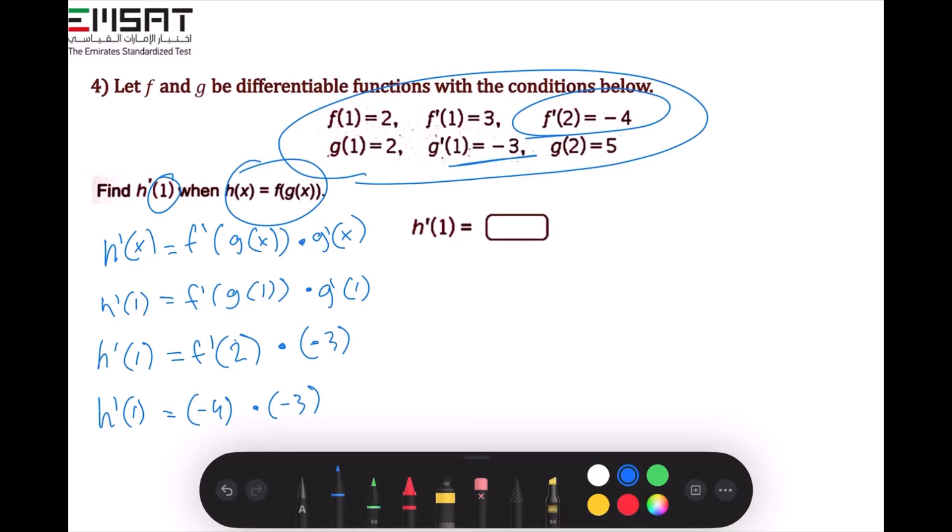Equals negative 4 times negative 3. Let's just write this on the side. So h'(1) equals negative 4 times negative 3, which is equal to 12.